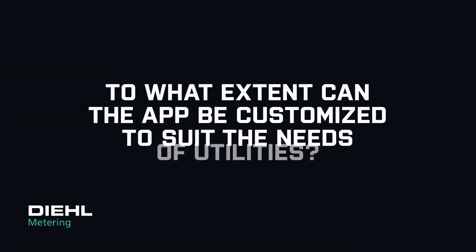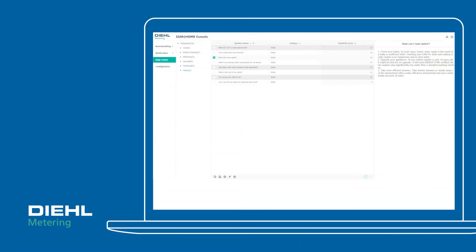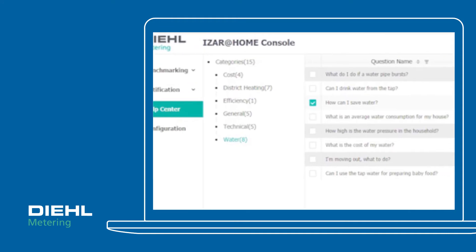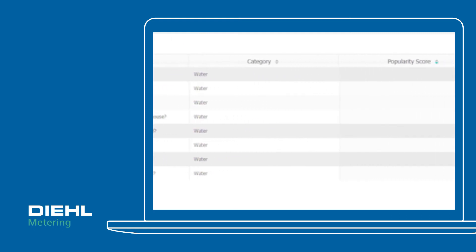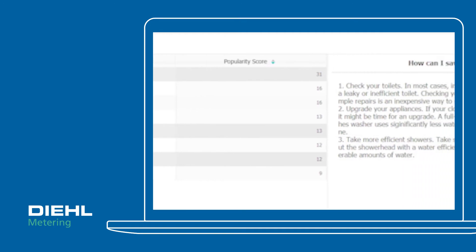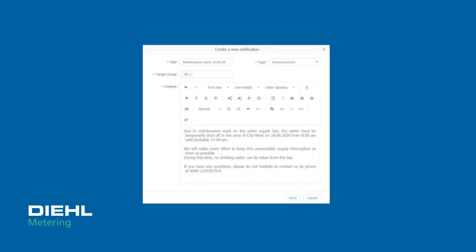To what extent can the app be customized to meet the needs of individual utilities? ISA at Home can be customized by the utility through a dedicated utility user interface. This allows the utility, for example, to set up their own questions and answers, to configure consumption targets for benchmarking and define the energy labels displayed to consumers. It also allows utilities to define and send customized notifications to their consumers. Additionally, the utility can configure which information is sent to and displayed for the consumer in the app.